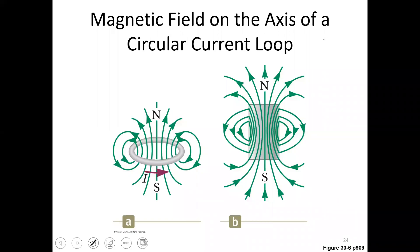We ended the last video talking about the magnetic field on the axis of a circular current loop. If we zoom out a little bit, we can see that the magnetic field of that circular current loop looks a little bit like a bar magnet. We would stack a bunch of these current loops together, or make a helix of current, to create a solenoid that would look even more like a bar magnet.